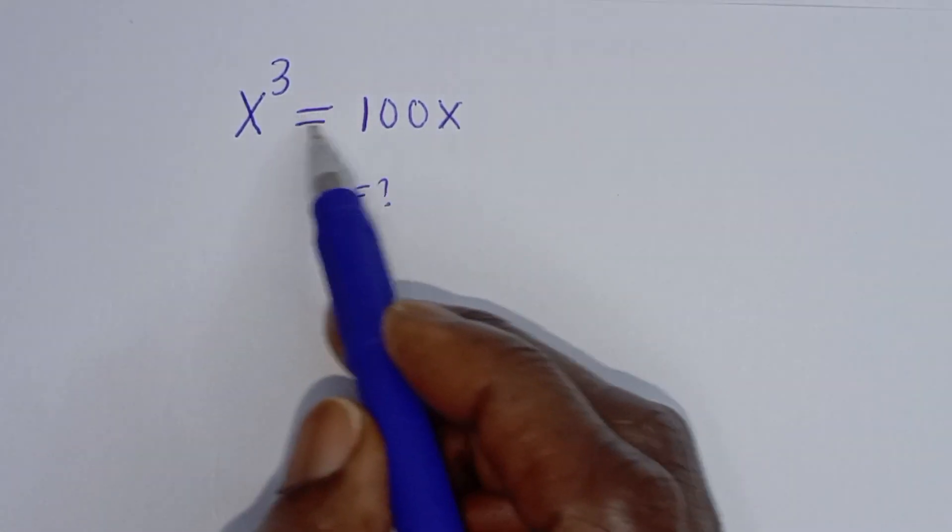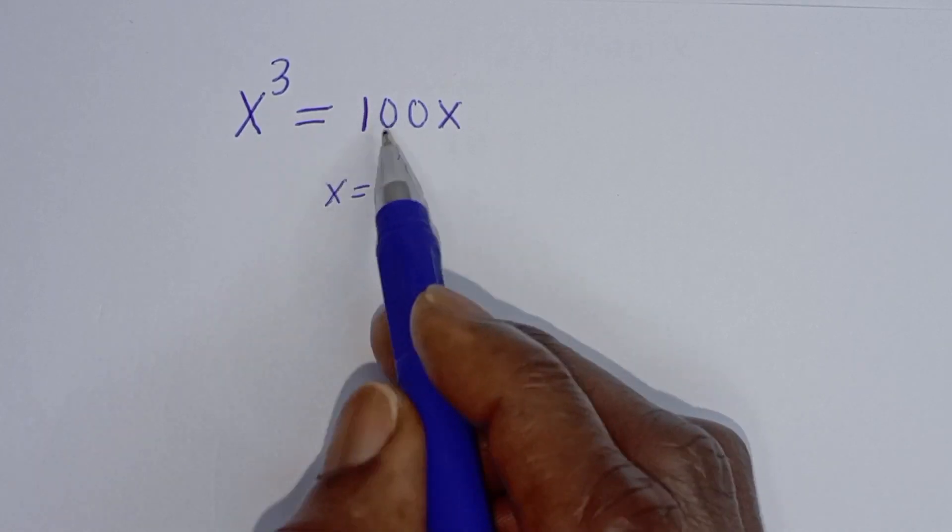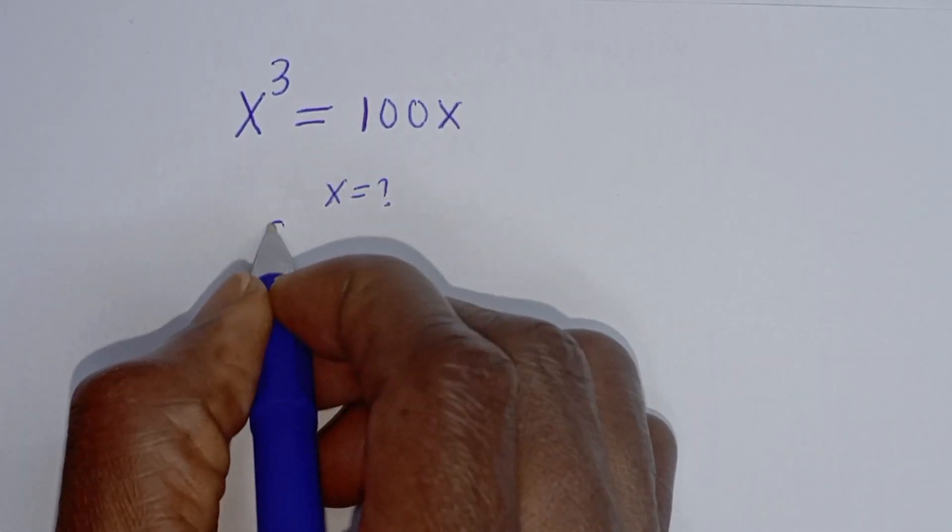Hello, how to solve for x from this given problem: x raised to power 3 is equal to 100x.